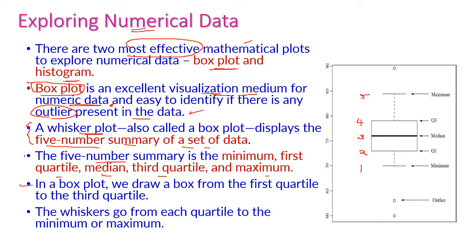In the box plot, we draw the box from the first quartile to the third quartile. The dark horizontal line represents the median, and the whiskers go from each quartile to the minimum or maximum.